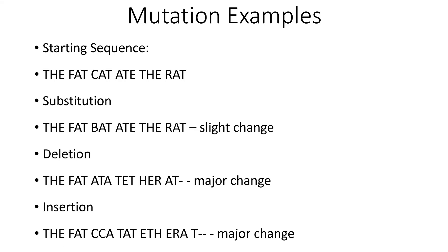The sentence has meaning — there's a specific intention to it. Now let's say we change that C in 'cat' and change it to a B. Now it says 'the fat bat ate the rat.' There's a slight change, but most of the meaning of the sentence is still there. It's a little different than it was, but it's still a sentence.